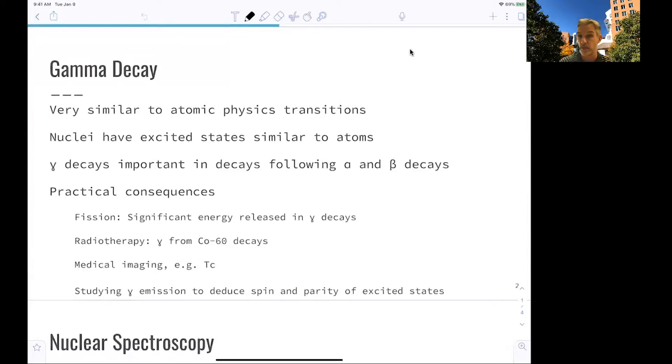Practical consequences of this are, for example, in fission processes, where a significant amount of energies can be released with photons. Radiotherapy, where you try to remove cancer cells or kill cancer cells with gamma rays. Medical imaging works this way. And in general, you can use the emission of those photons to reduce the spin and the parity of excited states.